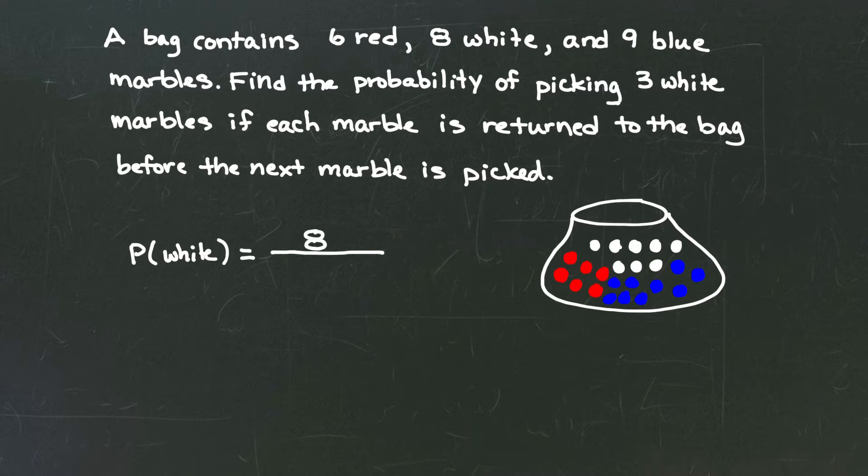In the denominator we now put the total possible elements in that sample space, or in other words the total possible numbers or marbles, the total number of marbles in that bag.